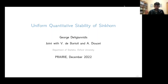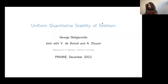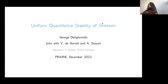Hi everyone, it's my great pleasure to host George Delianides, my colleague from Oxford University. After obtaining his PhD from the School of Mathematical Sciences at the University of Nottingham under the supervision of Sergey Yutev, George moved to the Department of Mathematics at the University of Leicester as a teaching fellow. In 2012 he moved to the Department of Statistics at Oxford as a departmental lecturer, staying until September 2016 when he moved to King's College London as a lecturer in statistics. He then moved back to Oxford in December 2017 as Associate Professor of Statistics. Today he will talk about uniform quantitative stability of the Sinkhorn algorithm.